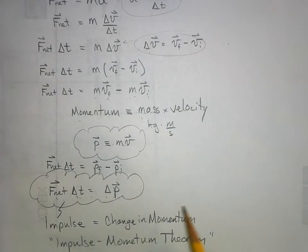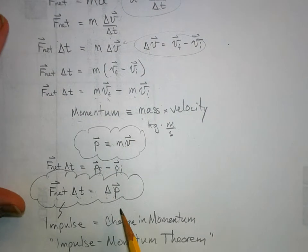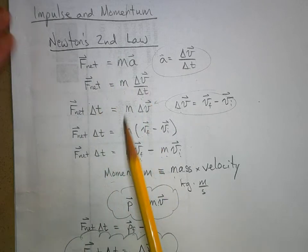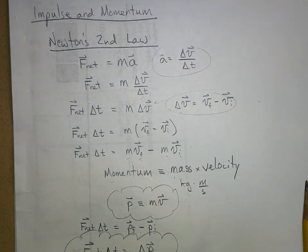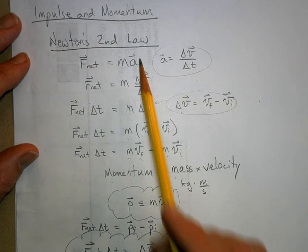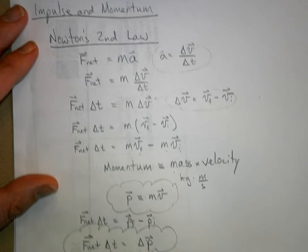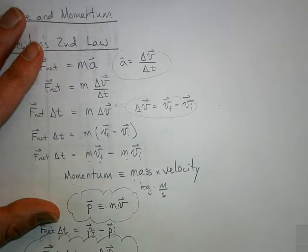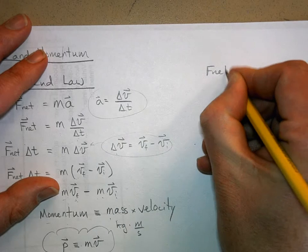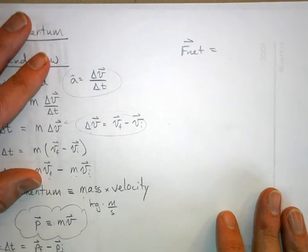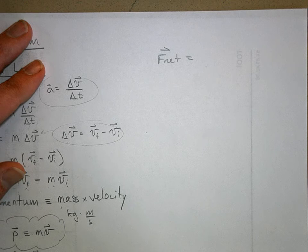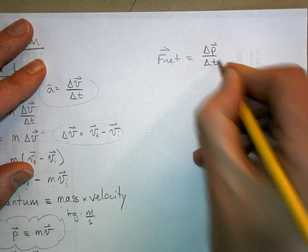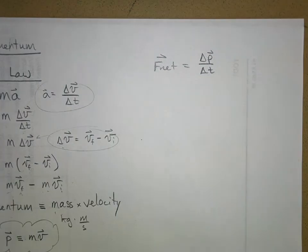This next part isn't in your book, but I want to show you because I started off talking about how I didn't tell you the full truth about Newton's second law. What Newton actually did was take the impulse-momentum theorem and solve it for the net force. He said: the net force equals the change in momentum over the change in time. That's how he originally expressed his second law.